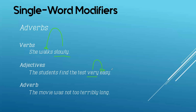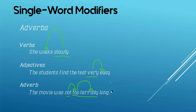How about the last sentence? 'The movie was not too terribly long.' The adjective is long. The adverbs are not, too, and terribly. Not modifies too, too modifies terribly, and terribly modifies the adjective long. What I'm trying to emphasize is that adverbs can also modify another adverb. So, that would be for single word modifiers — adverbs and adjectives.